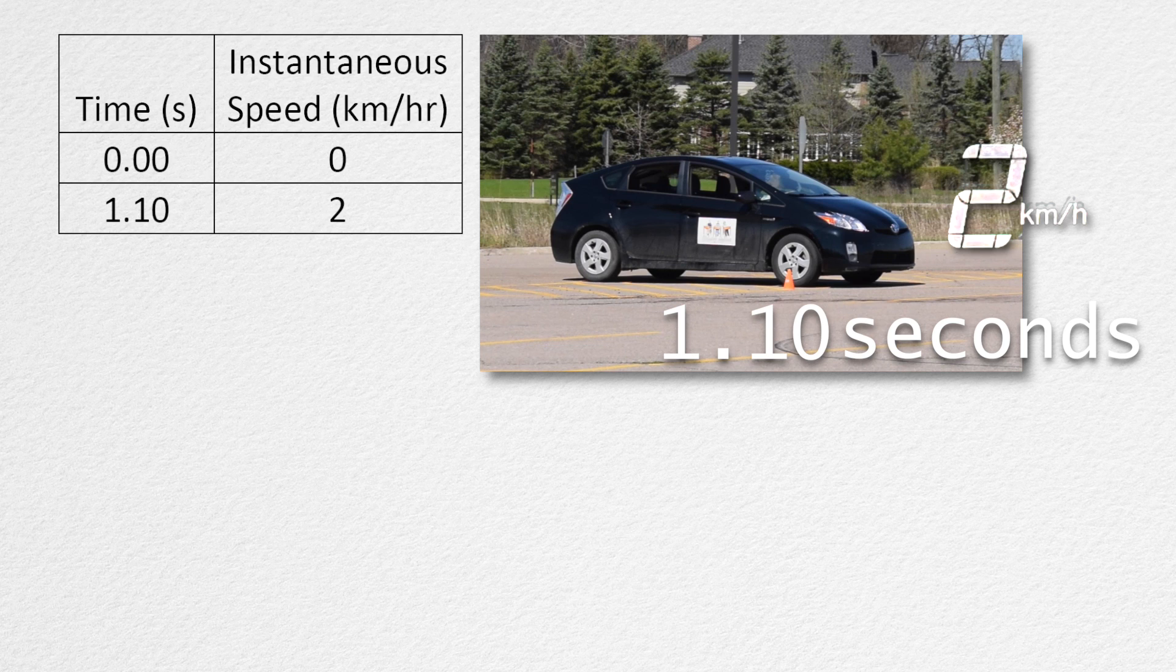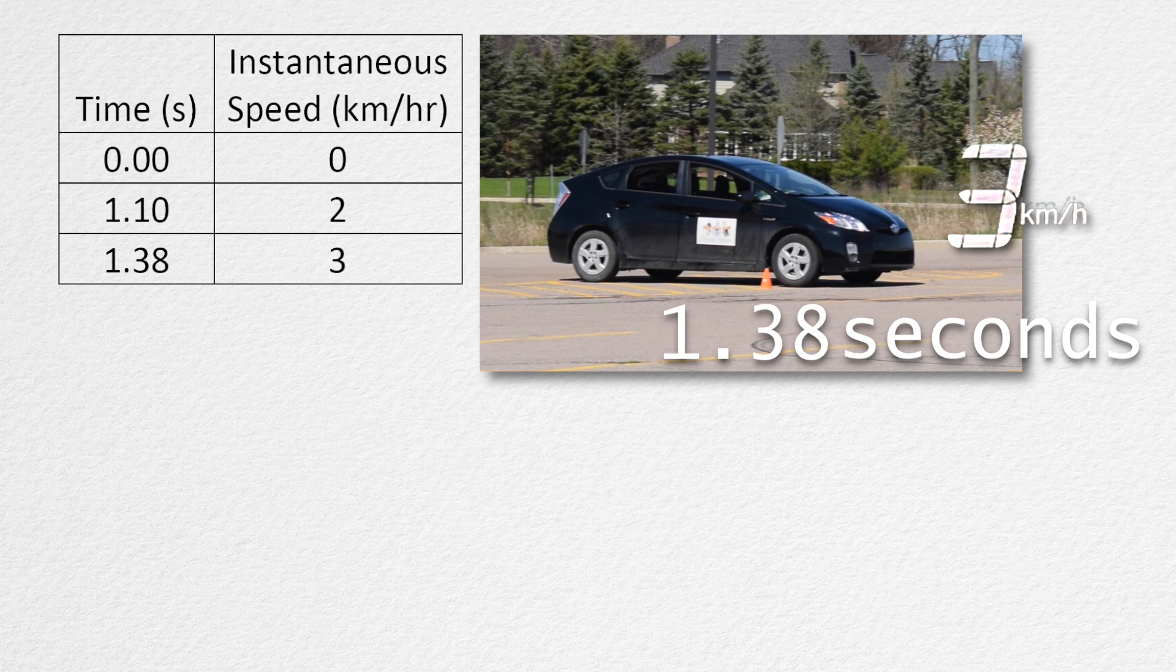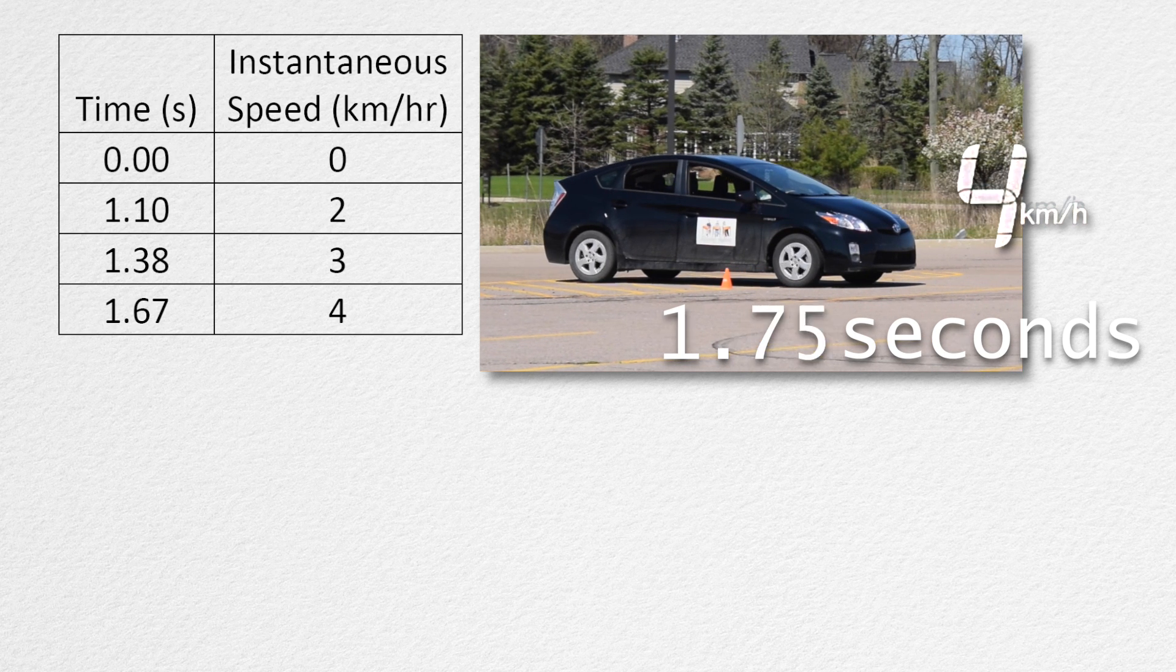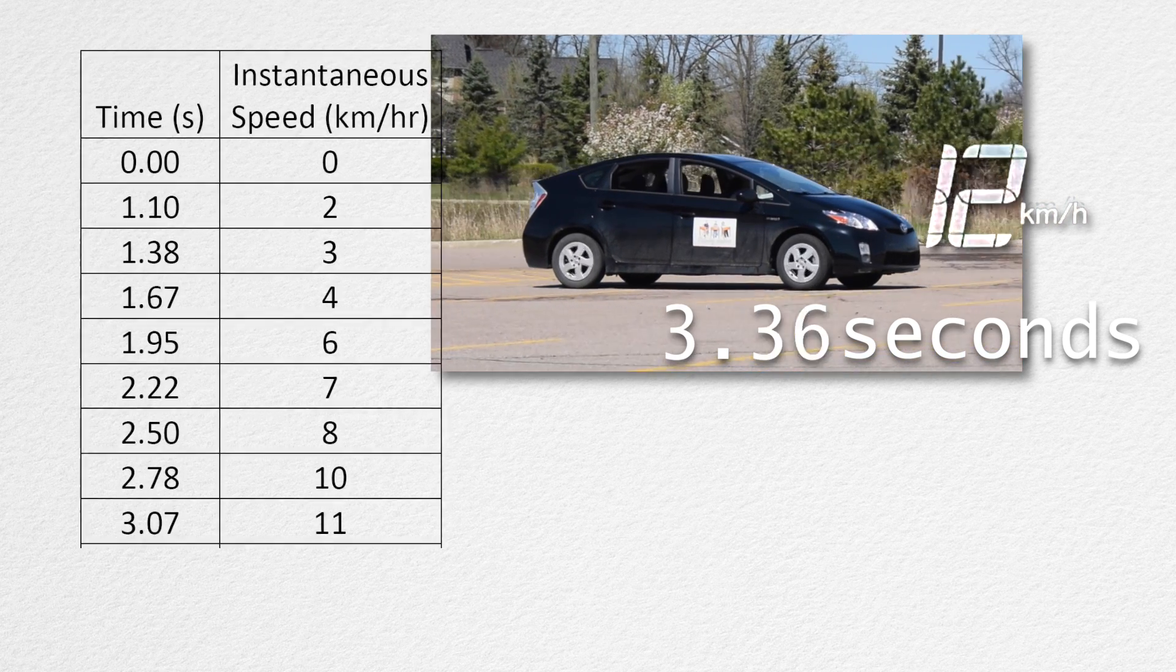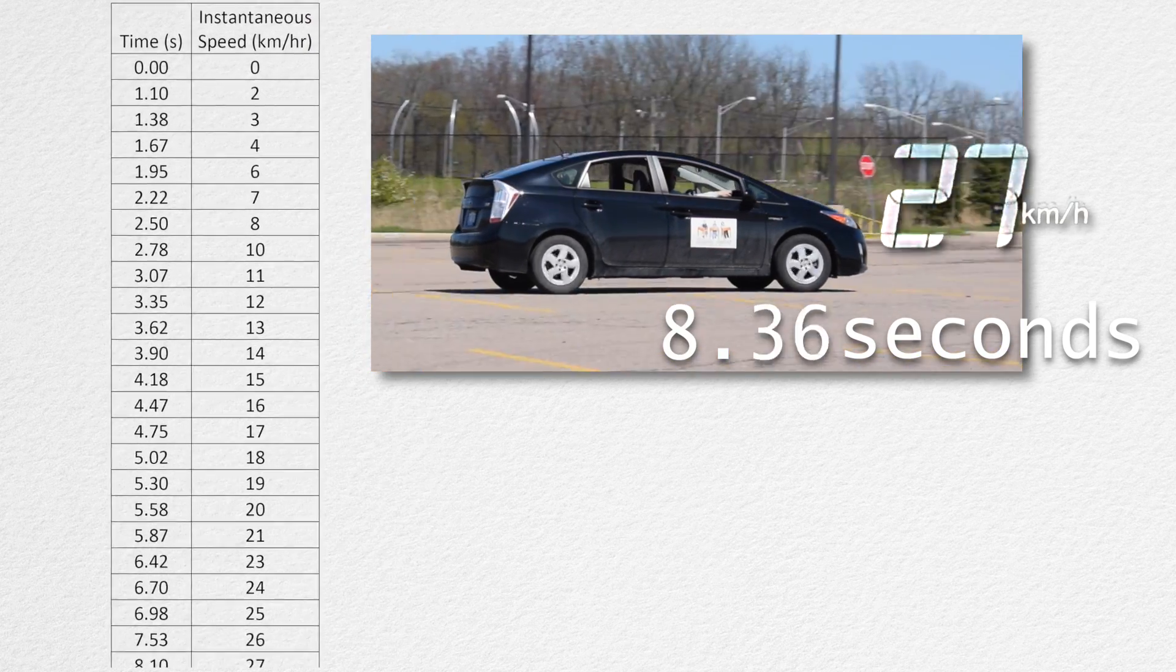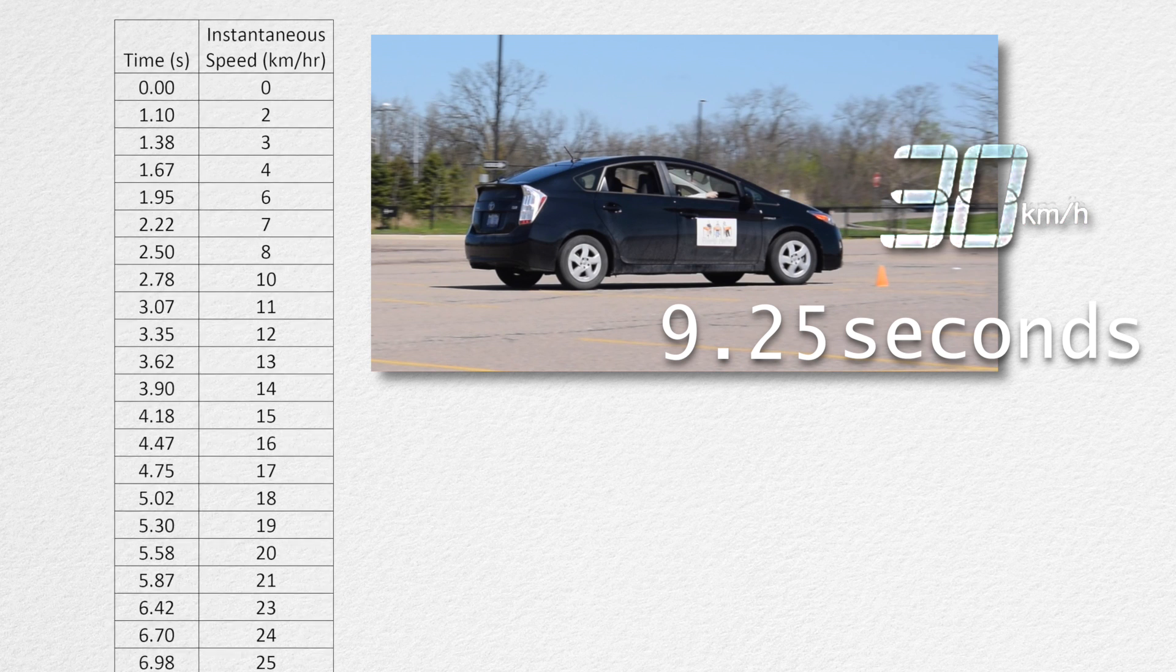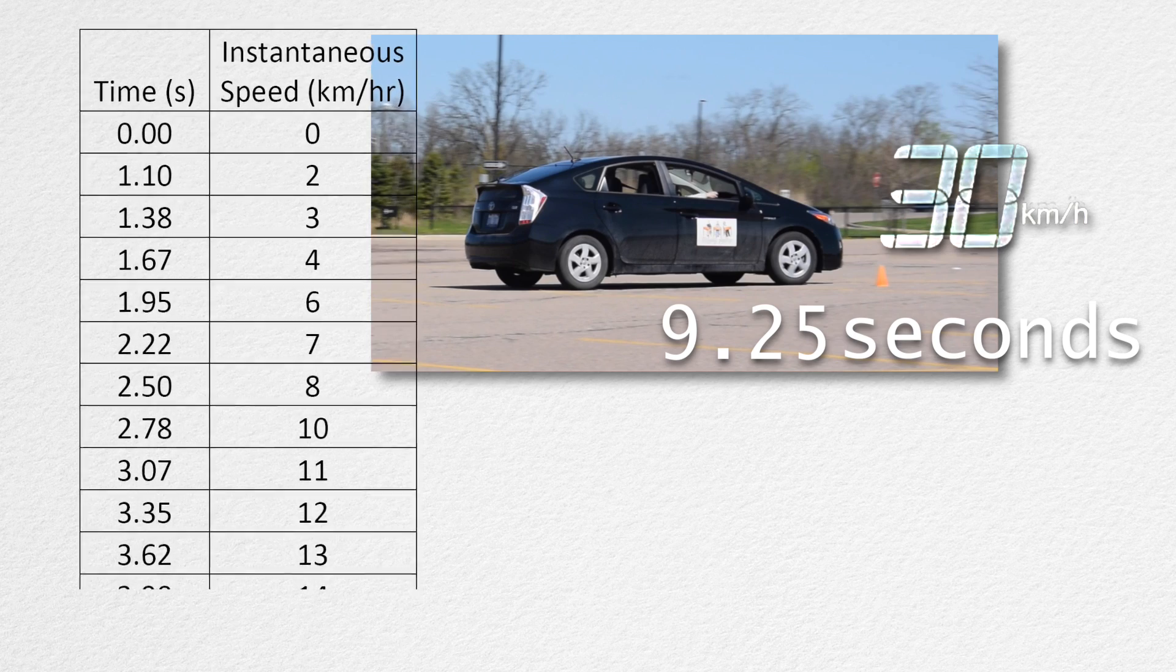You can see it changed to 2 kilometers per hour at 1.10 seconds, 3 kilometers per hour at 1.38 seconds, 4 kilometers per hour at 1.67 seconds, 6 kilometers per hour at 1.95 seconds, and we continue to do that until the car has reached 30 kilometers per hour at a measured distance of 42 meters from where the car started. For legibility's sake, I am only going to include the first few data points in our data table here. If you want to see the rest of the data table, please use the lecture notes by following the link which just appeared.